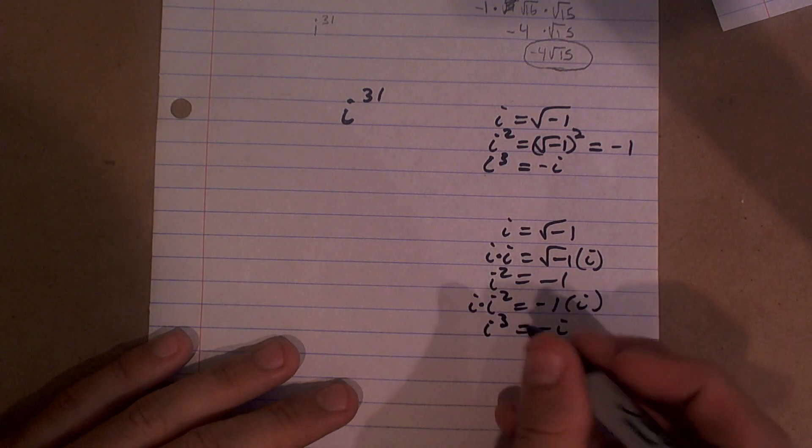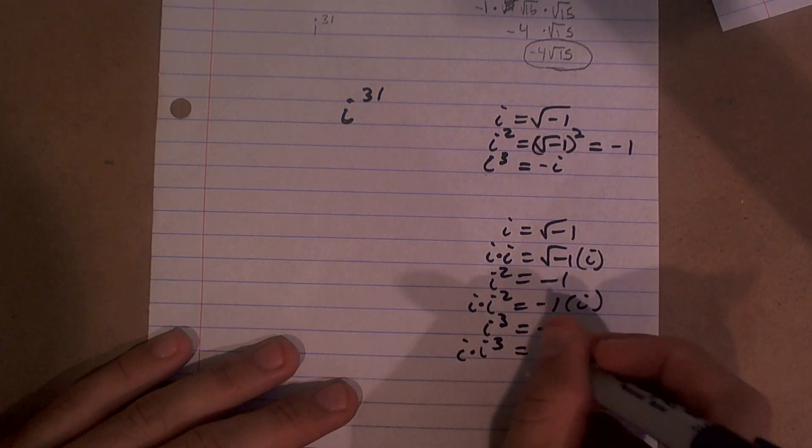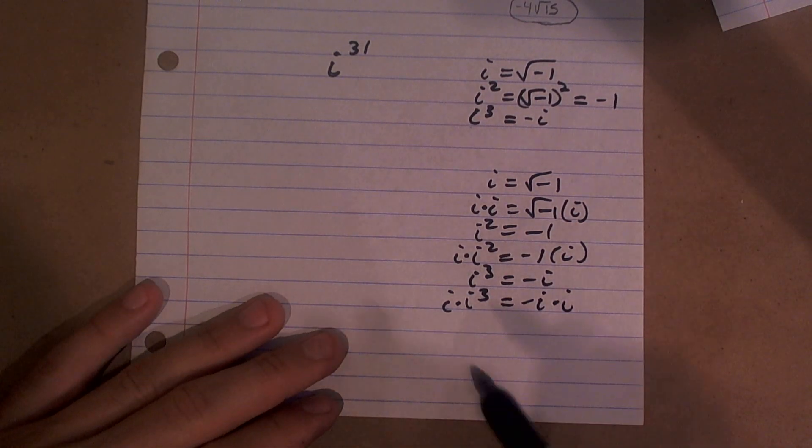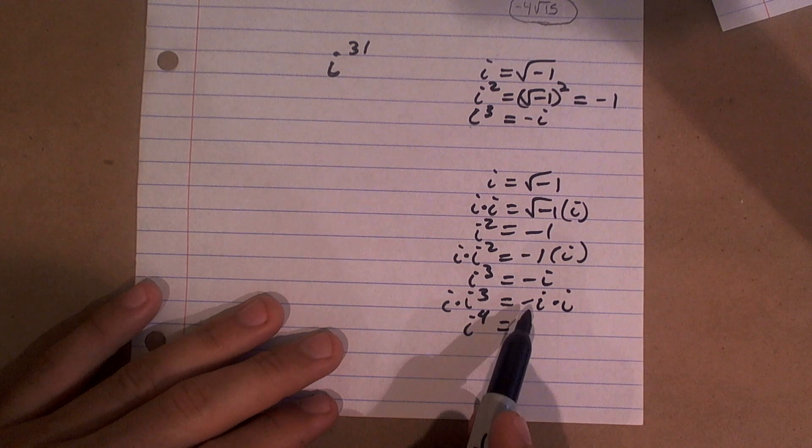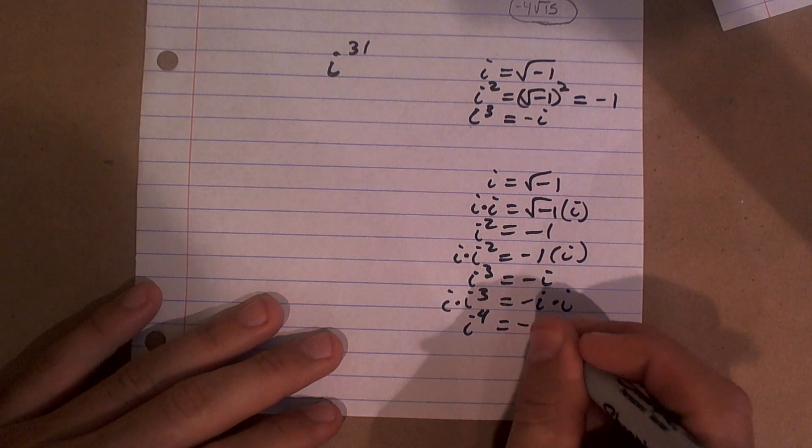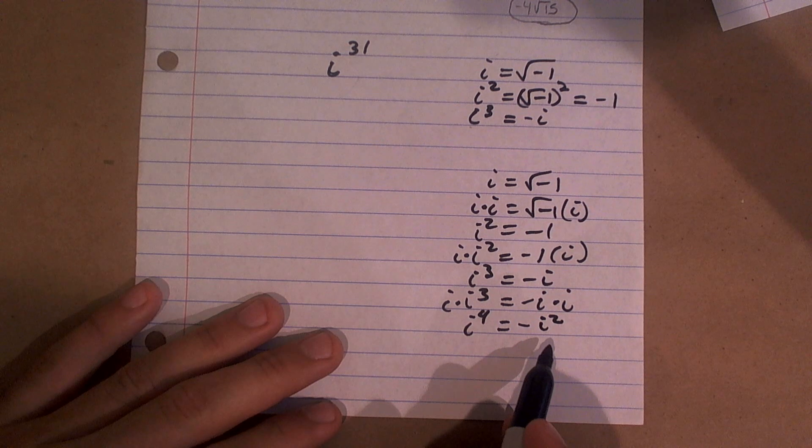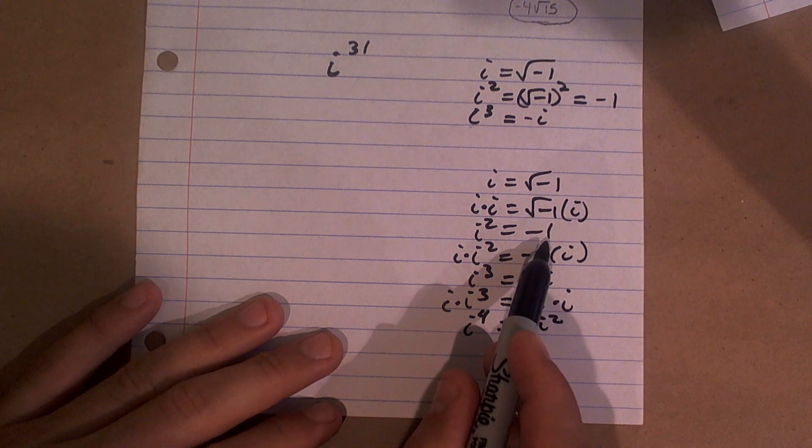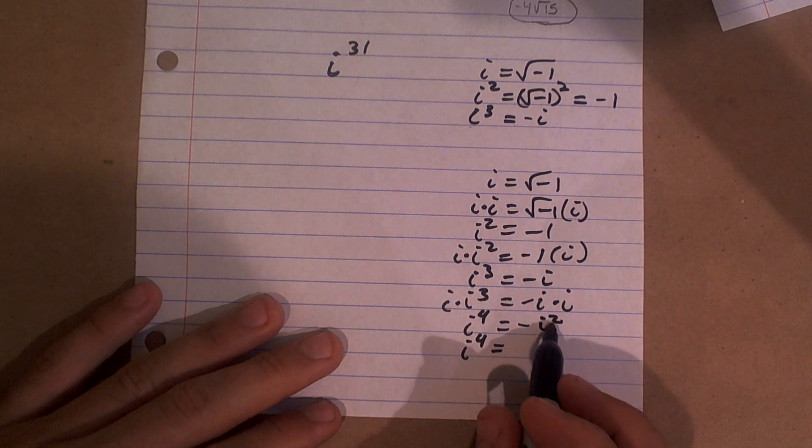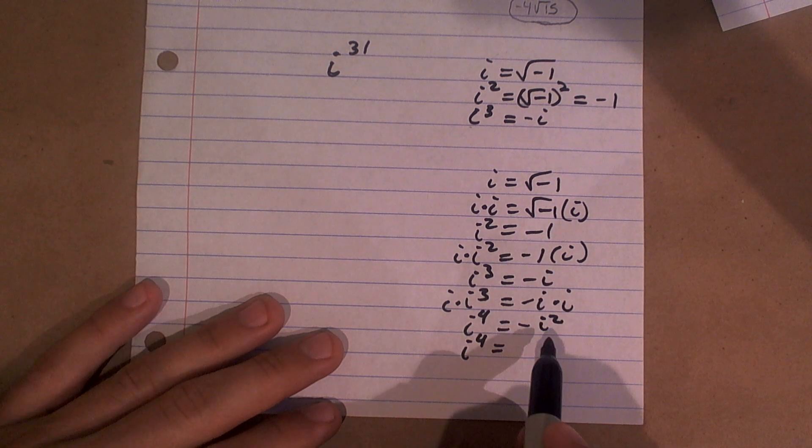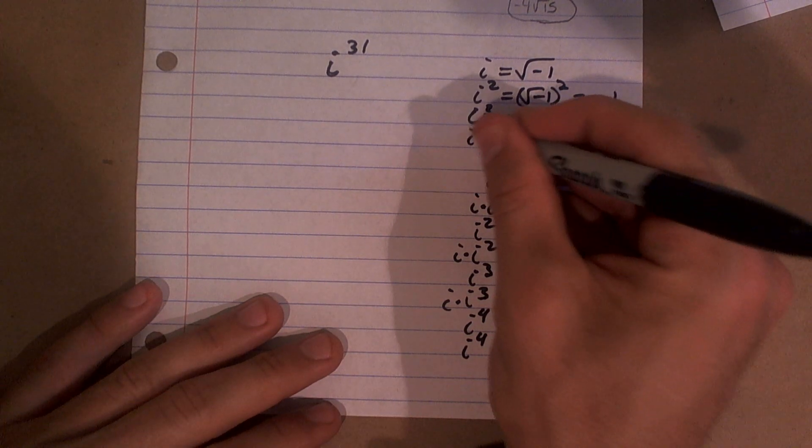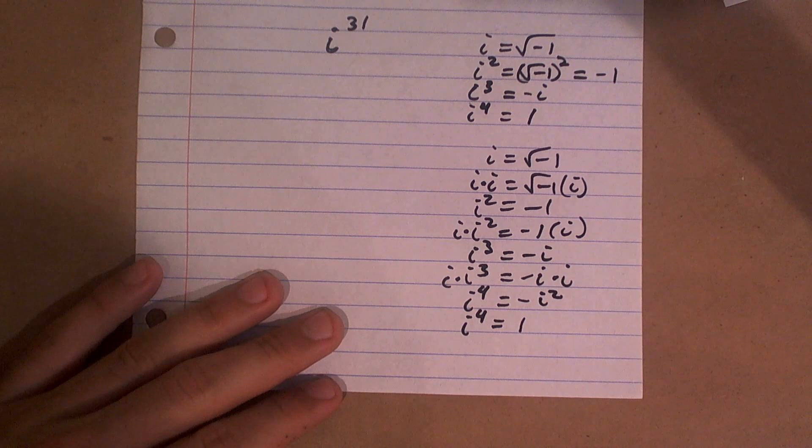Let's multiply by i again on both sides. So now I have i times i cubed, which is i to the fourth, equals negative i times i. It's going to give you a negative i squared. What's i squared? i squared is equal to negative 1. And it's negative, right? So a negative negative 1 is going to give you a positive 1. So therefore, we have i to the fourth equals a positive 1.